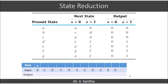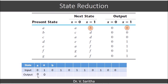So let us complete this table now. The initial state is given as A and the input is 0. A on input 0 goes to next state A with output 0. We write the next state and output accordingly.